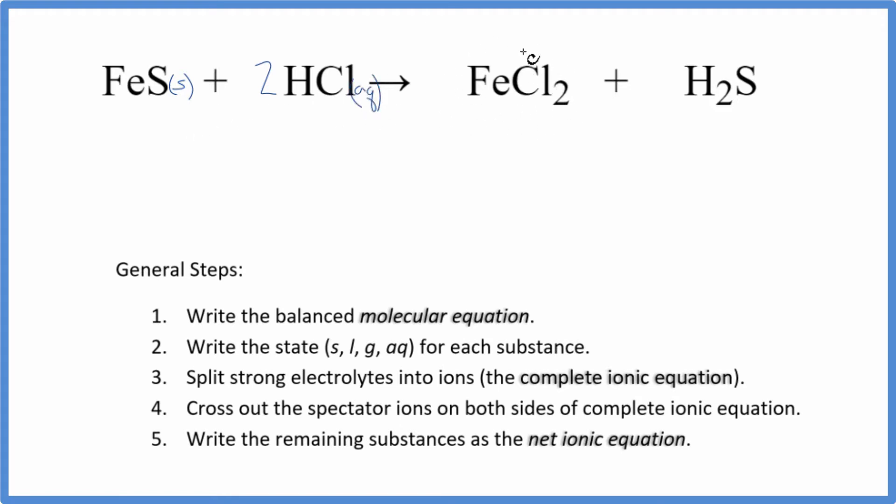Iron chloride - chlorides are very soluble, so that's going to be aqueous. And this H2S, we're going to say that it's going to be a gas. It could be aqueous if it stayed dissolved in the water, but it won't dissociate. So either way, we're not going to split it apart when we write the complete ionic equation.